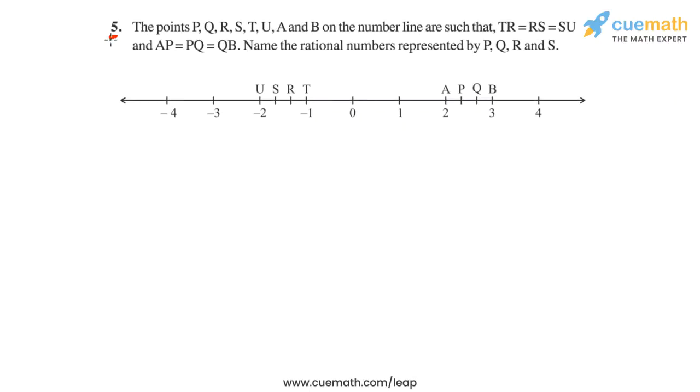In question 5 of this exercise, the problem statement says the points P, Q, R, S, T, U, A and B on the number line are such that TR equals RS equals SU.